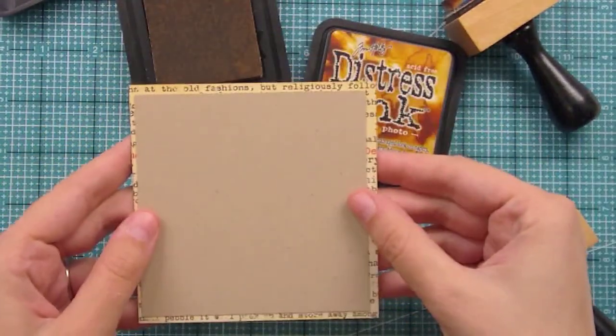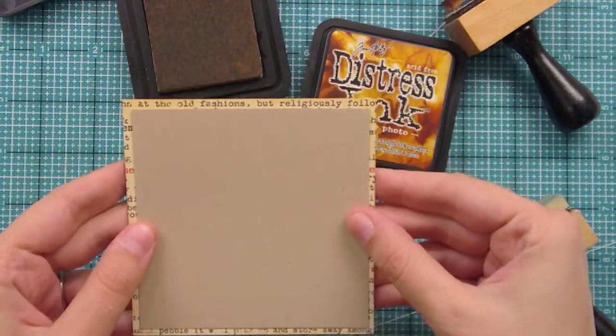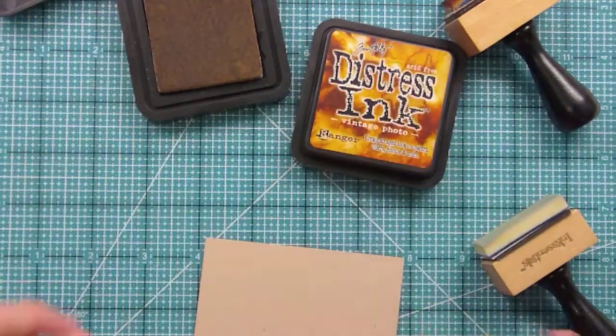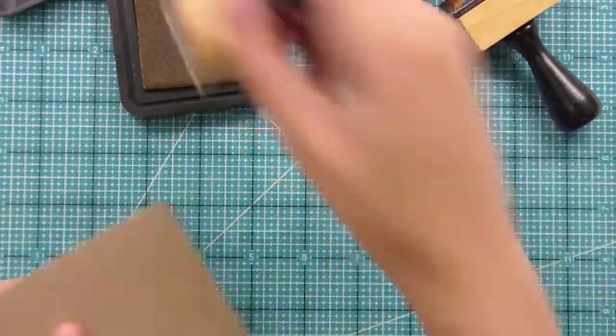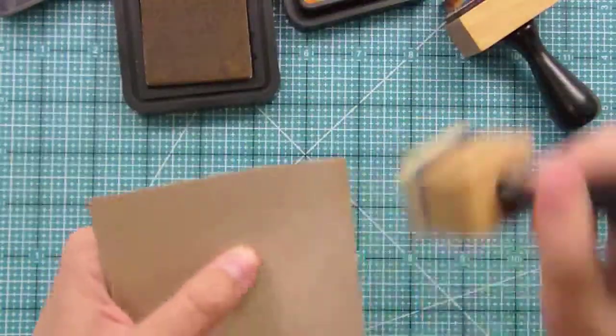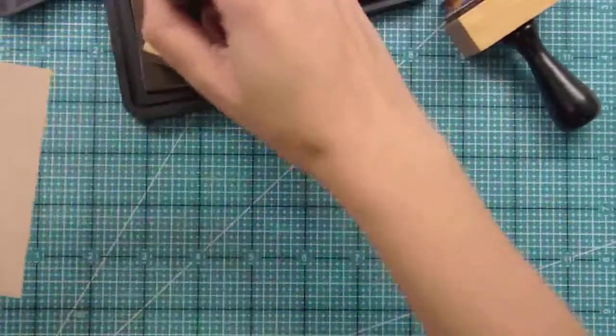Right now I've cut a piece that's a three and three quarters square that's going to go over the front. That's the piece that we're going to be stamping and doing all our stuff on. But before we start stamping, I'm going to actually distress it now because sometimes you might smear them, which I've done before.